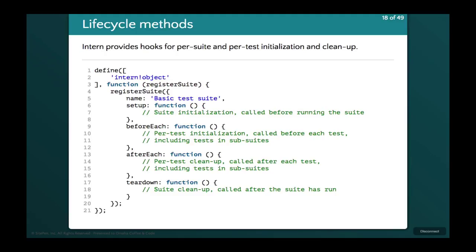We also have lifecycle methods that make it easy to set up and run tests so we don't repeat a lot of code. We have setup, before each, after each, and teardown. In setup, we put code that needs to run at the beginning of the whole test suite — things that need to exist for the suite to run — so we don't duplicate it in each test. If we need code to reset before each test, we use before each, and clean up with after each. Finally, teardown so we don't leave anything alive, letting us start from zero with the next test suite.